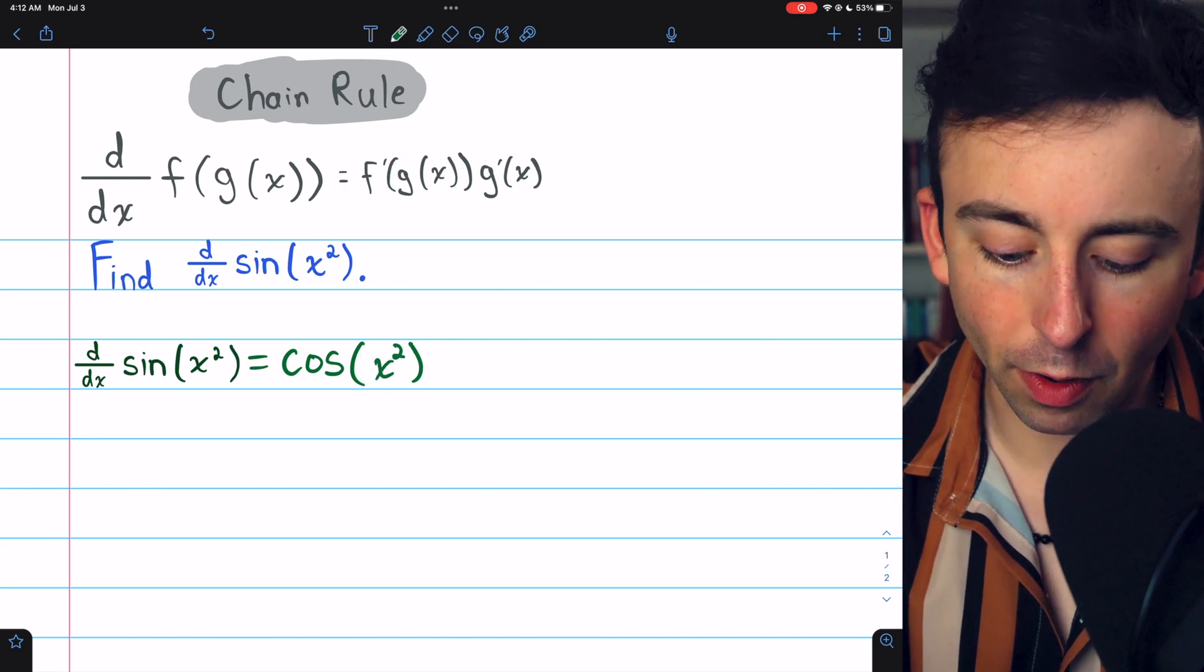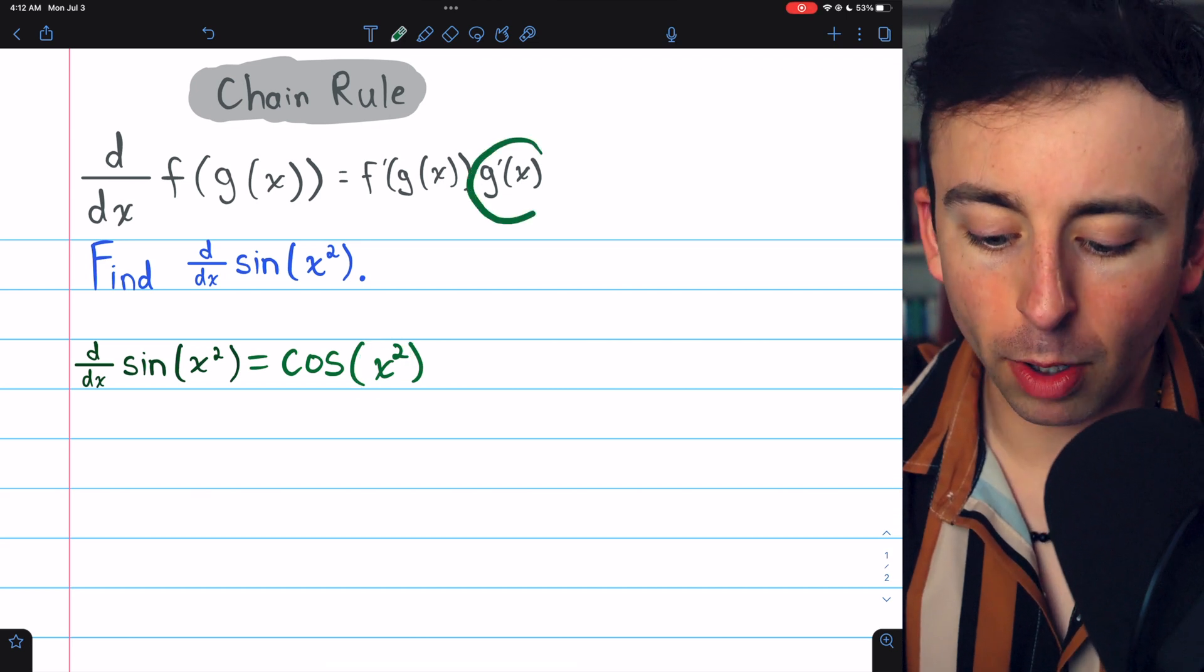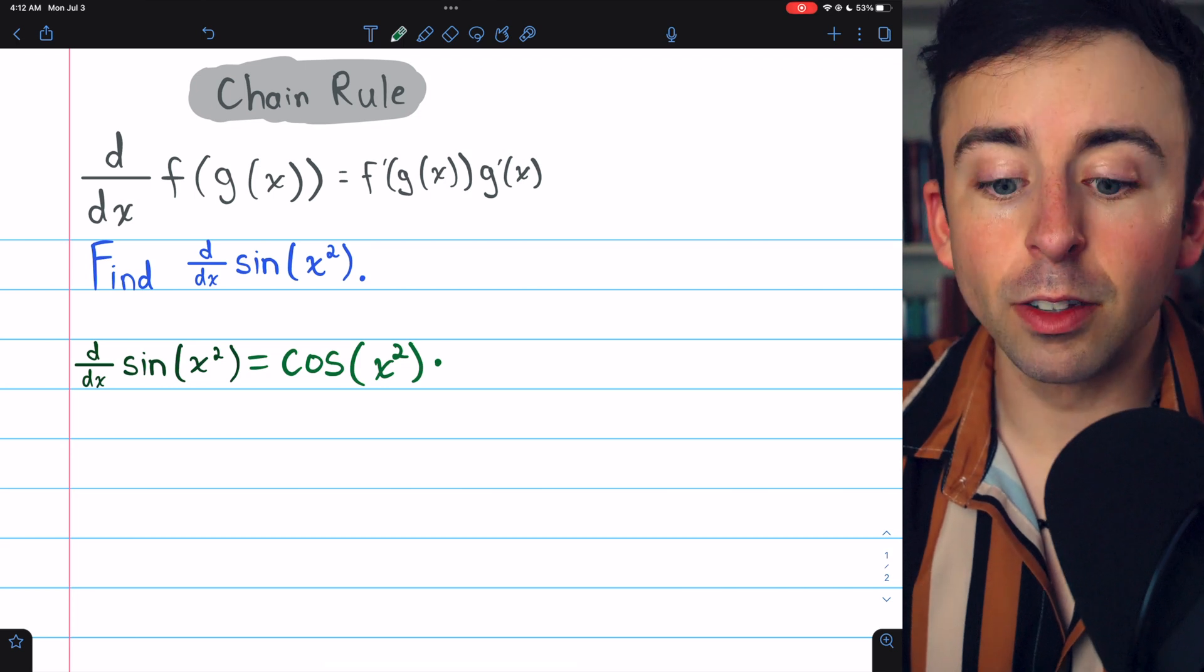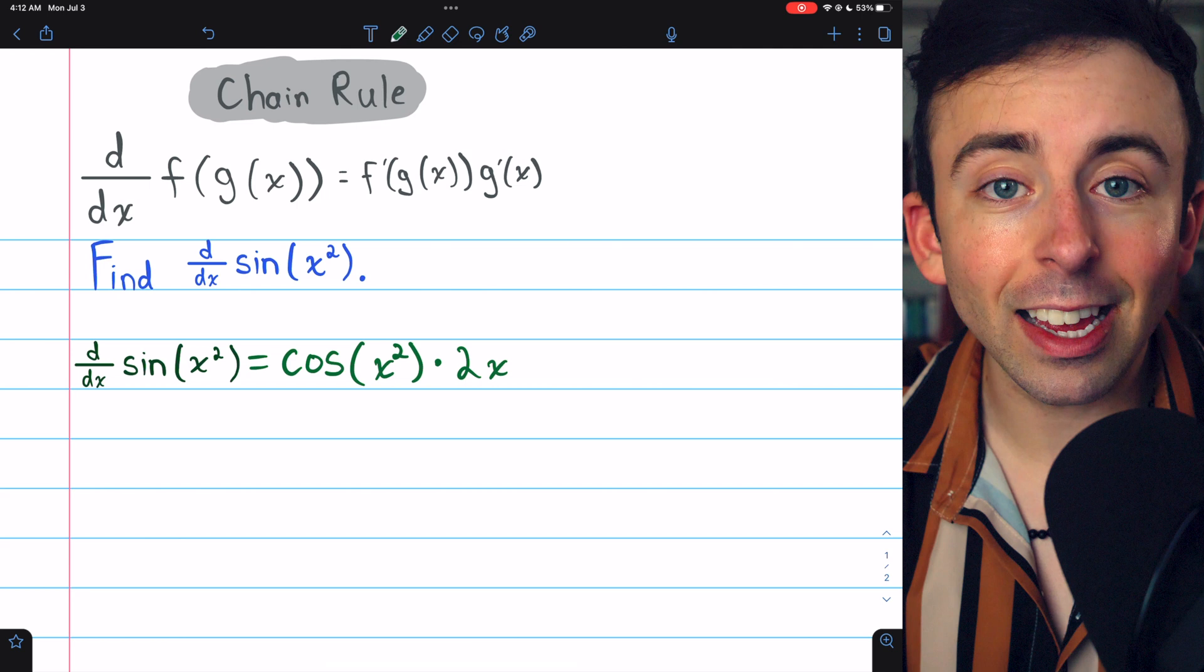In this case, that inside function, our g of x, is x squared. Then, we just multiply by g prime, the derivative of that inside function. The derivative of x squared is 2x, and that's our derivative.